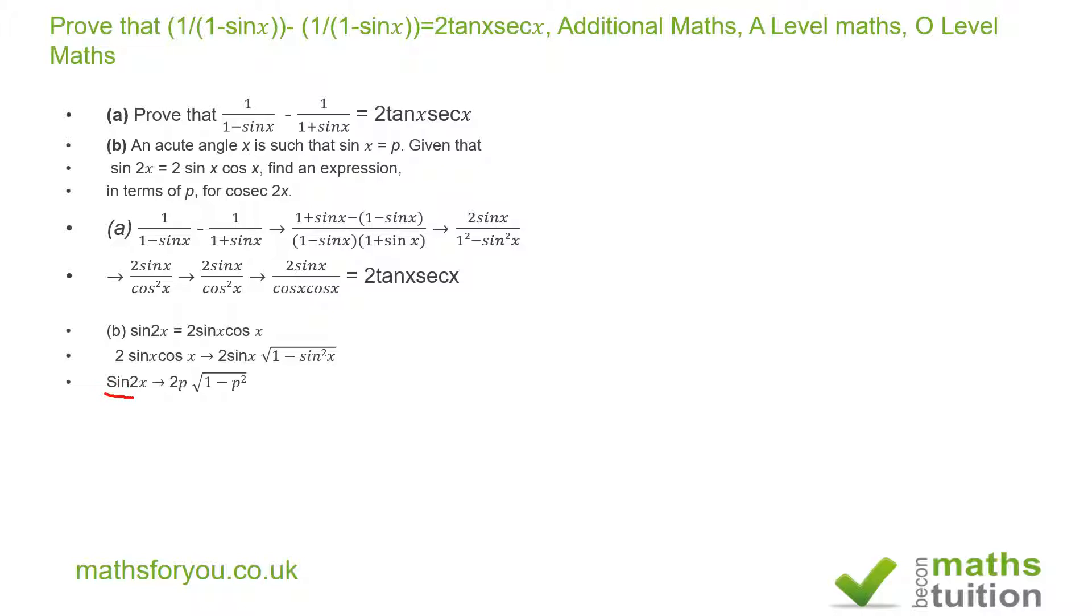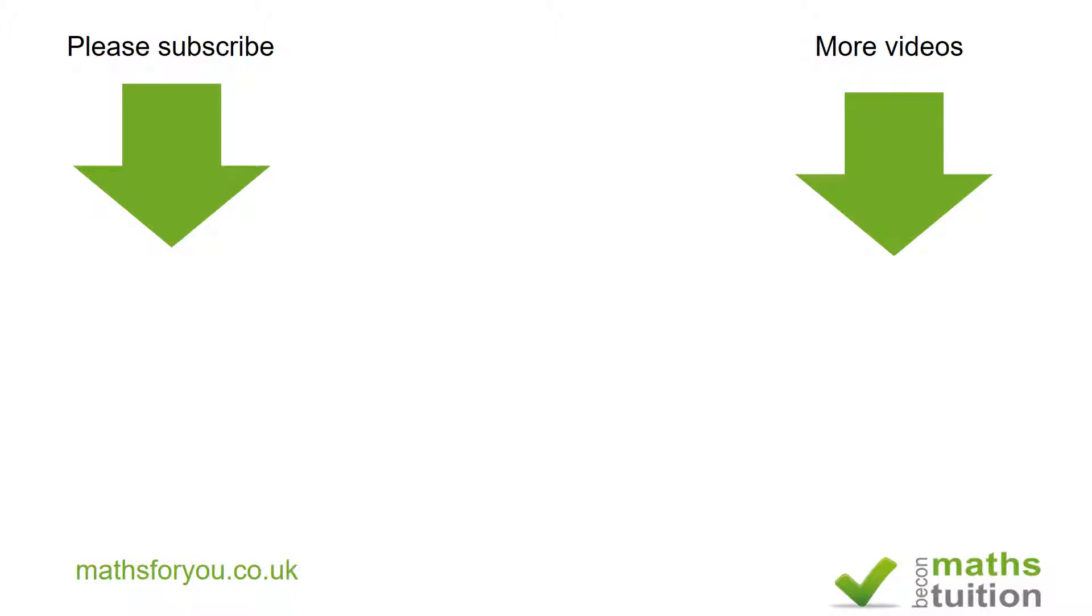If we take the reciprocal of that, we must also take the reciprocal of that one as well. So we have 1 over sin 2x is equal to cosec 2x, and that's the same as 1 over 2p multiplied by the square root of 1 minus p squared.